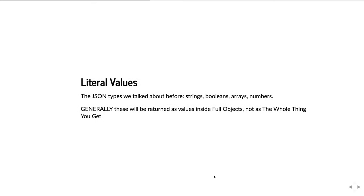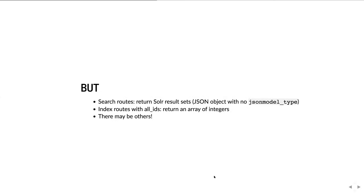Literal values are those JSON types we talked about earlier: strings, booleans, arrays, and numbers. These are also generally returned as values inside full objects and not as the whole thing you get. But search routes don't return JSON model objects — they return Solr result sets. They basically return the raw output of the Solr index program that ArchivesSpace uses for search and fast retrieval.